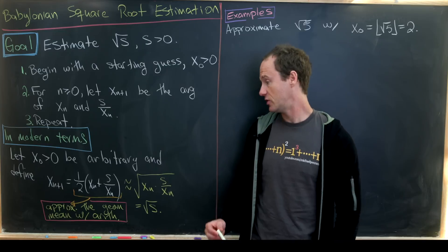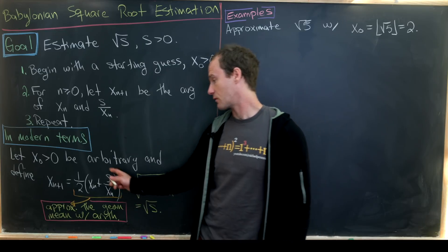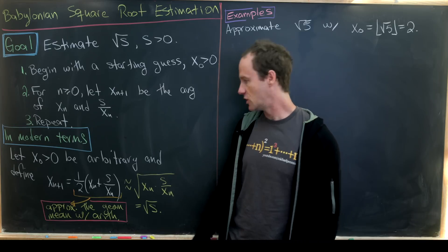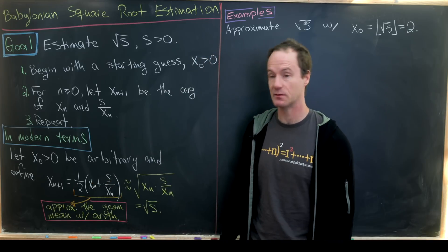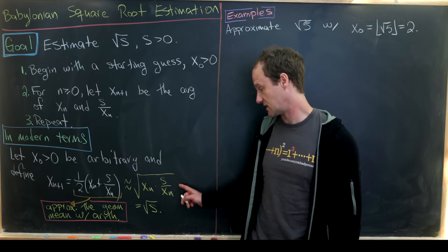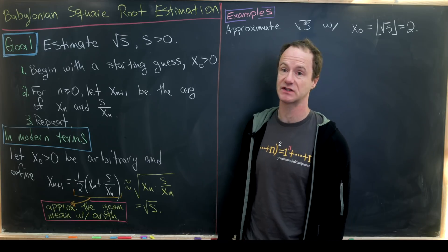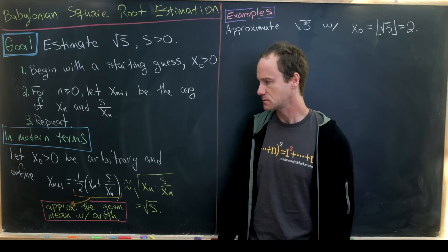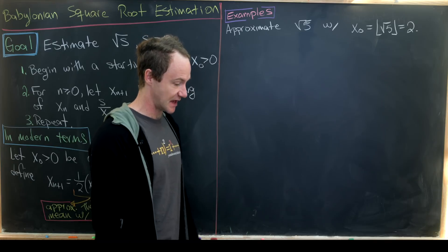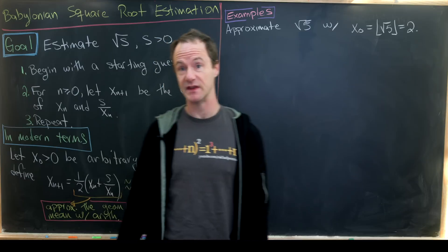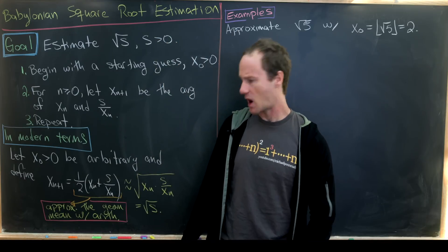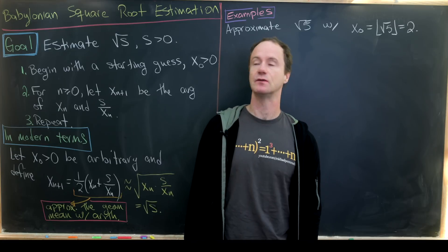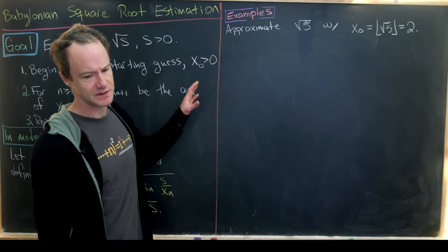What's going on under the hood here is that the arithmetic mean is being used to approximate the geometric mean. Because let's notice if we take the geometric mean of these two numbers, xₙ and s/xₙ, well that's the square root of their product which equals the square root of s. So that's why this thing works. Let's look at a couple of examples and then we'll indeed prove that this serves as a good approximation, which in modern terms will be to prove that the limit of this recursively defined sequence is in fact the square root of s.